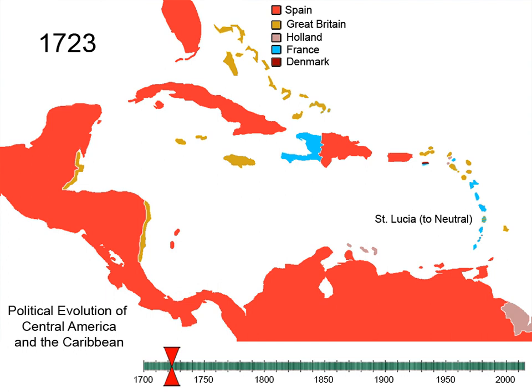New York was also importing large amounts of foreign molasses compared to English. At the same time, French imports of molasses to the colonies were also growing. This combination of importing foreign product to the English colonies caused England a lot of agitation in the years to come.